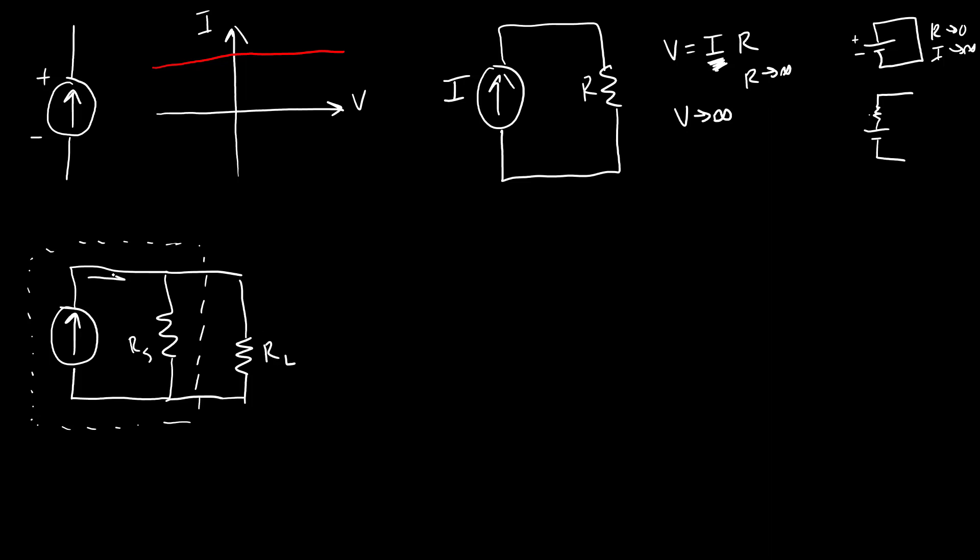So in this case, we have the total current coming from the source IS. And that is going to split into current that goes through the load IL and the current that goes through the internal resistance IRS. So we know from Kirchhoff's current law at this node that IS equals IRS plus IL. And ideally, we want as much current as possible to go through our load. So we want this number to be almost zero.